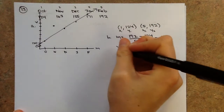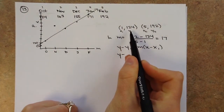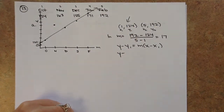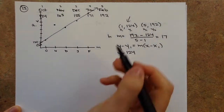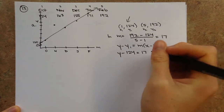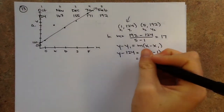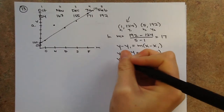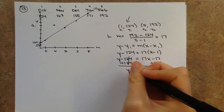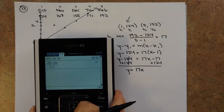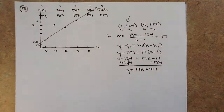A slope of 17 means with each passing month, you get about 17 extra emergency room visits. Using point-slope form with (1, 124) and slope 17: y minus 124 equals 17 times (x minus 1). Distribute: y minus 124 equals 17x minus 17. Add 124 to both sides: y equals 17x plus 107. That's your final answer for part B.